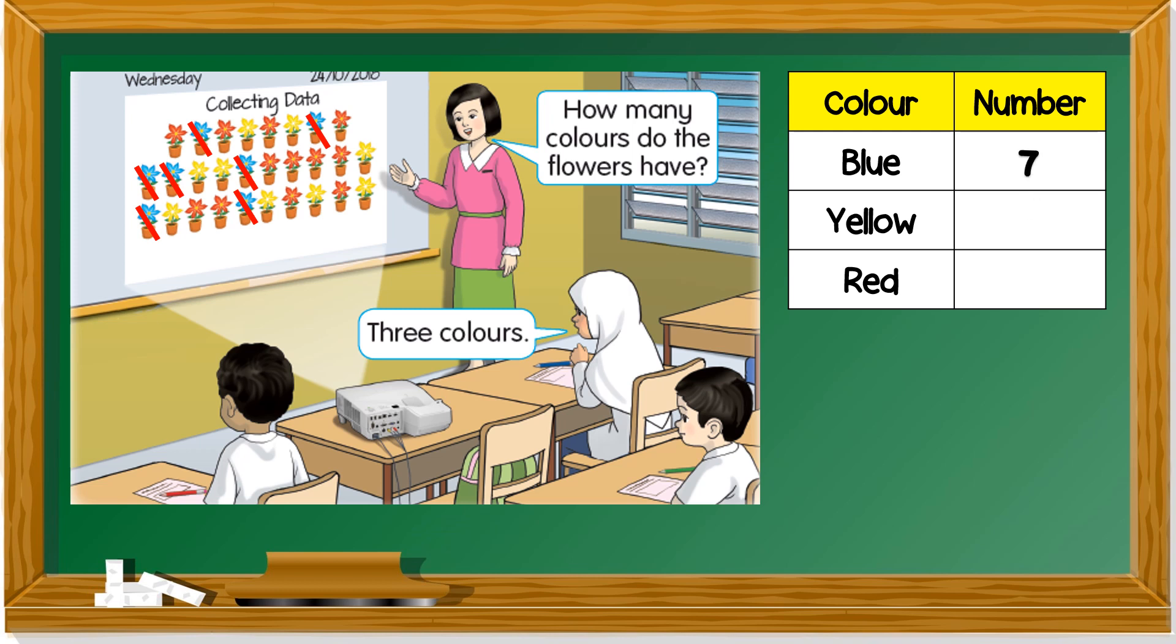Next to the blue, we can see red. So, let's count red. One, two, three, four, five, six, seven, eight, nine, ten, eleven, twelve. There are twelve red flowers.